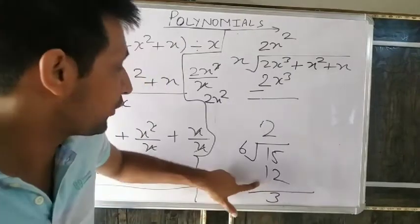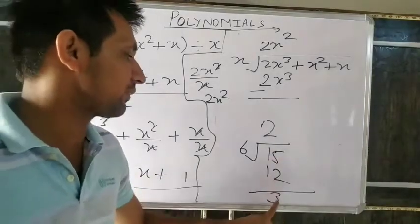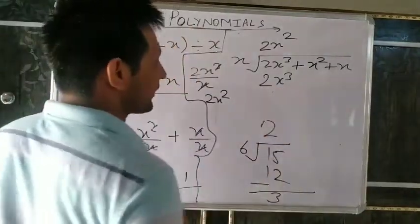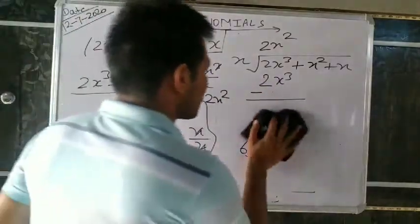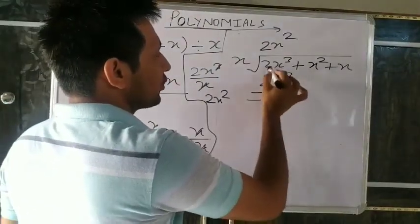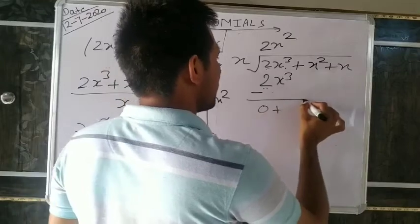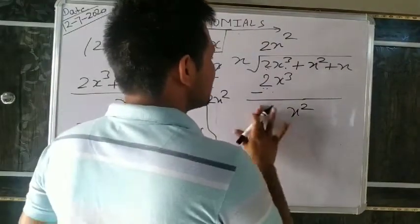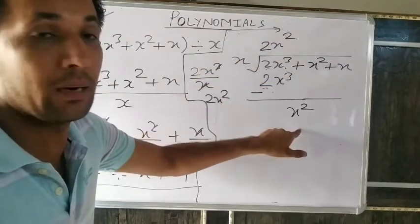So 2x³ minus 2x³ equals zero. Now the next digit is x². Again write a number in the quotient — when multiplied it becomes x². x² divided by x gives x. So write plus x in the quotient. Then x times x equals x². Change sign: x² minus x² equals zero.